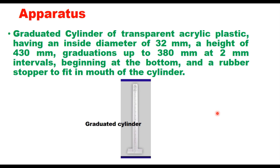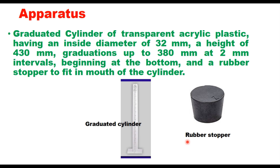The apparatus required for conducting this test includes a graduated cylinder of transparent acrylic plastic having an inside diameter of 32 mm, a height of 430 mm, graduated up to 380 mm at 2 mm intervals starting from the bottom. It also requires a rubber stopper to fit in the mouth of the cylinder.